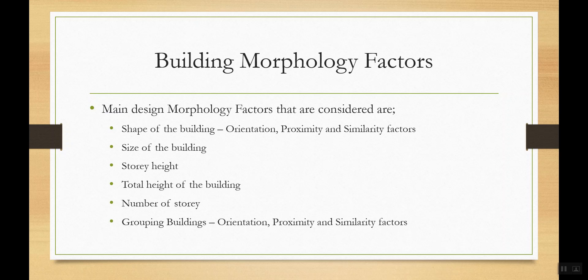With that mindset, we move to building morphology factors — also called design morphology. It discusses the design and how that design affects your cost, quality, and service. One factor is the shape of the building. You might have circular, triangular, or square shapes, or oval shapes. The shape has a big impact, and you need to consider it when thinking about the economical side of your project.